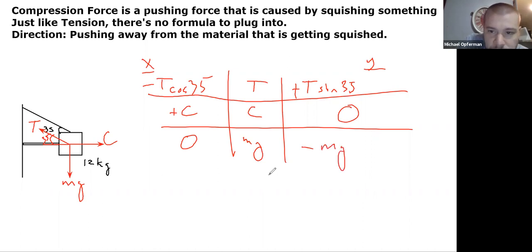So my two equations are going to be in the X direction: minus T cosine 35 plus C equals zero. And in the Y direction: T sine 35 minus mg equals zero. And the equals zero is coming from the question telling you that the block is being held at equilibrium and is stationary in this setup.